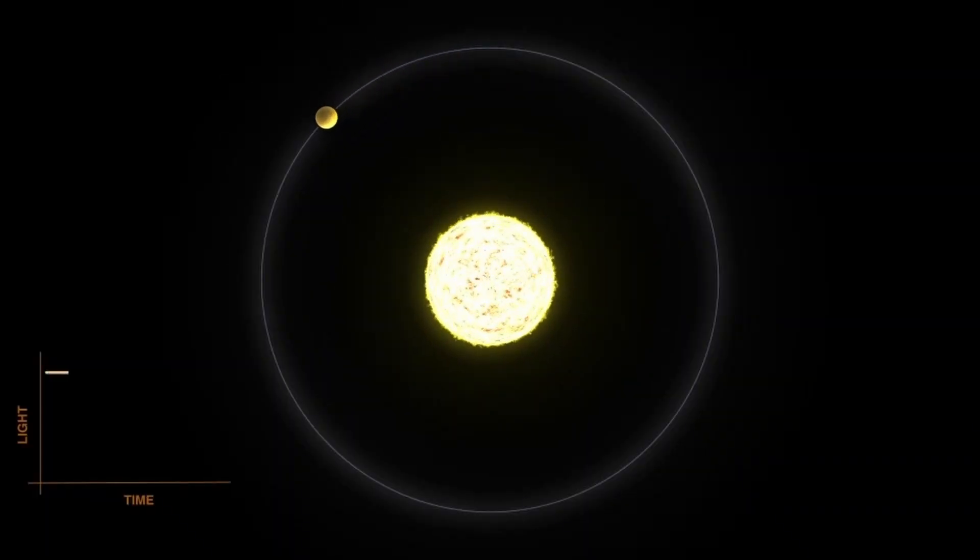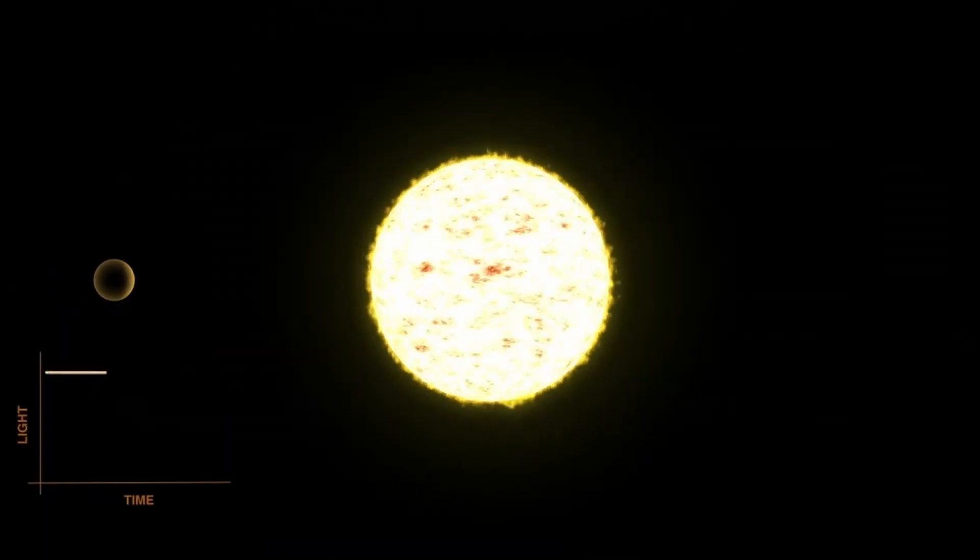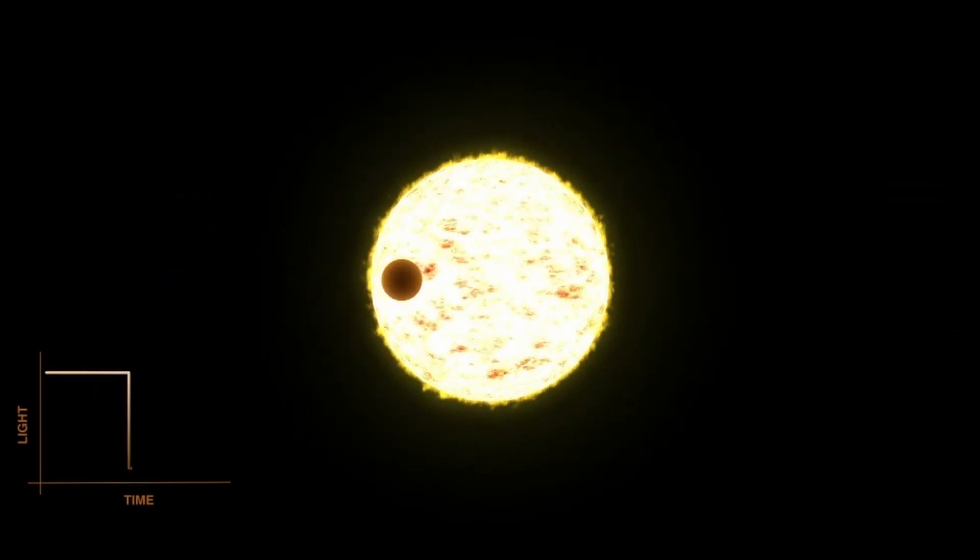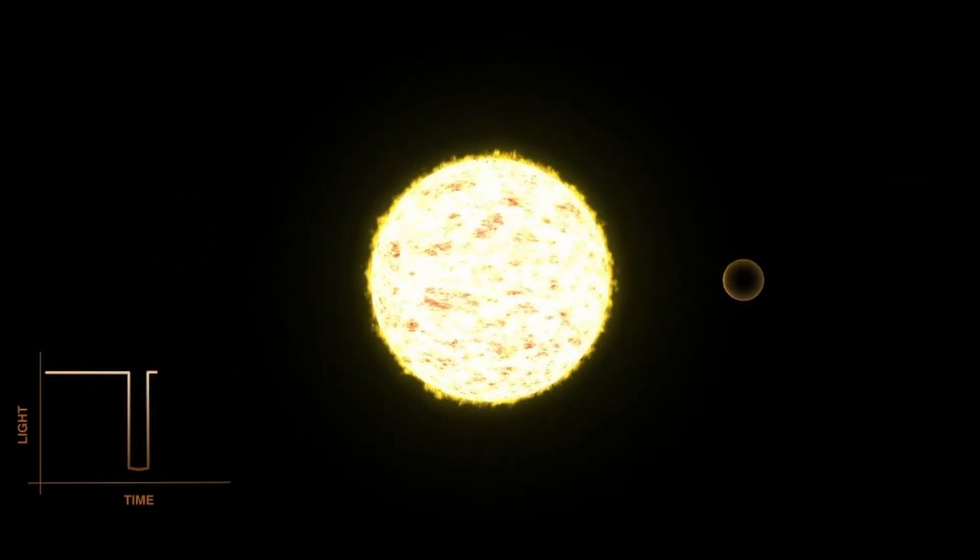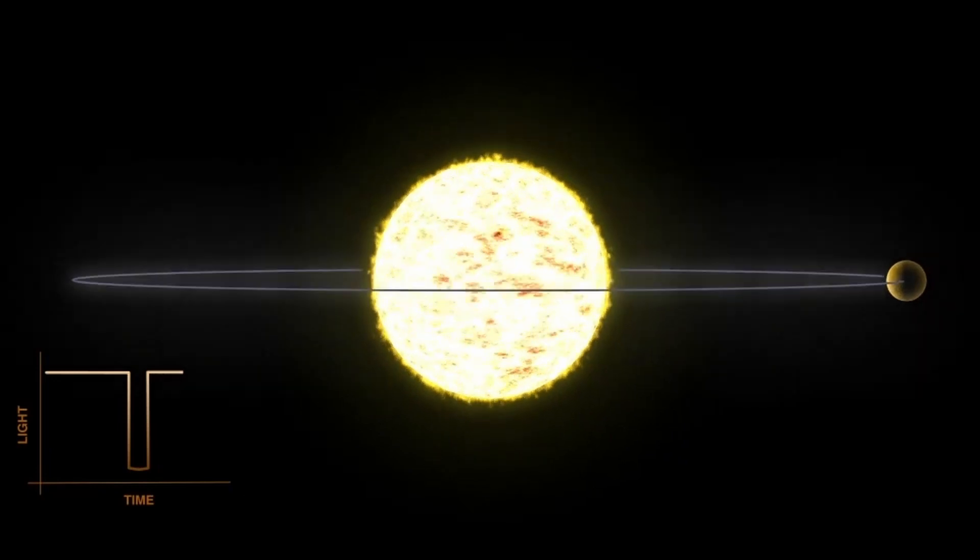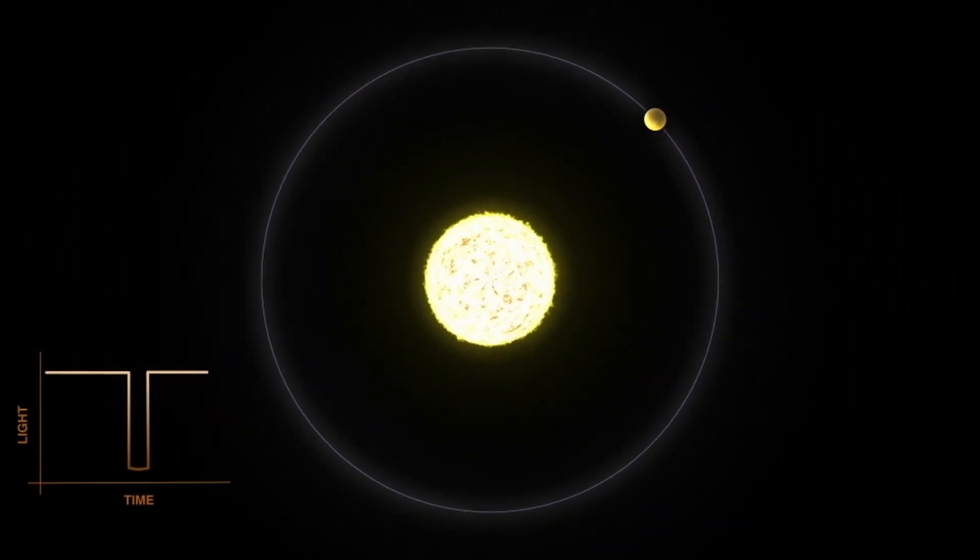The transit method looks for tiny dips in brightness as a planet blocks out part of the star's light. These dimmings tell us a lot about the size of the planet, its orbit around the star, and the length of its year.